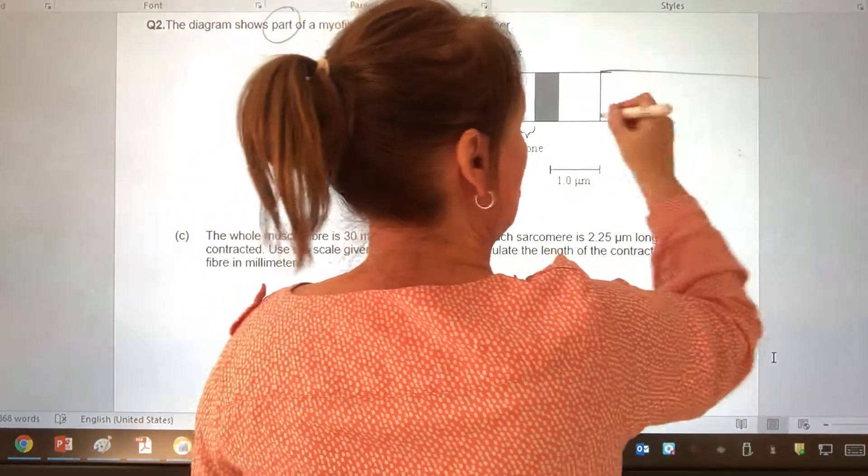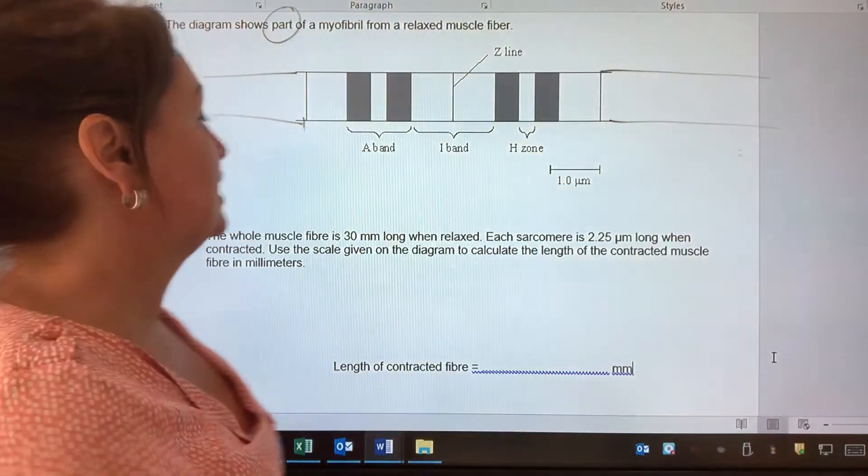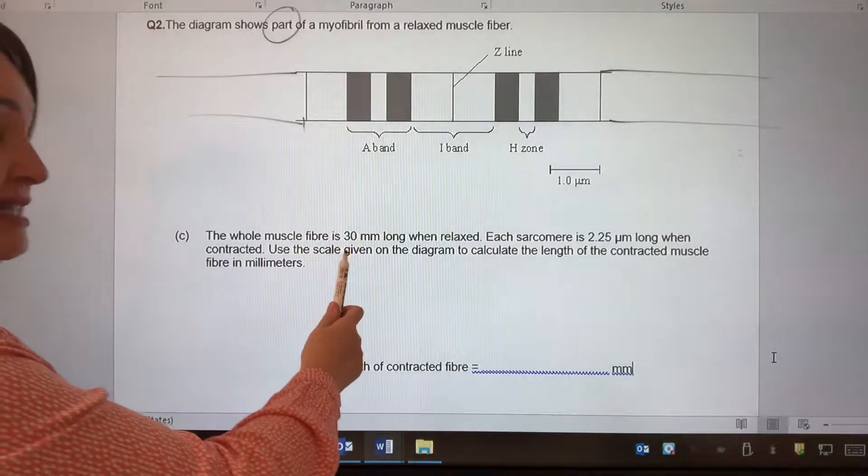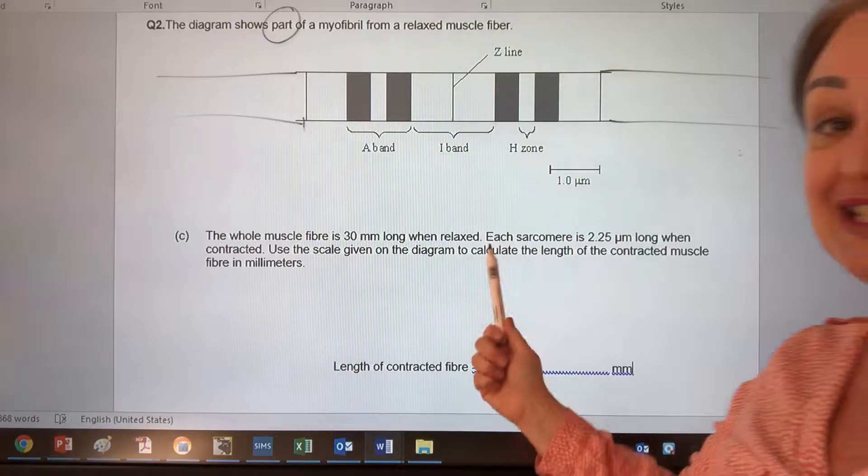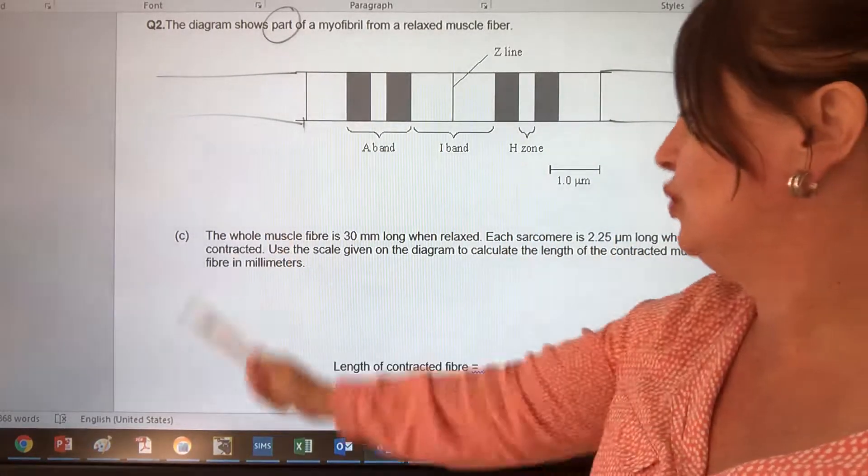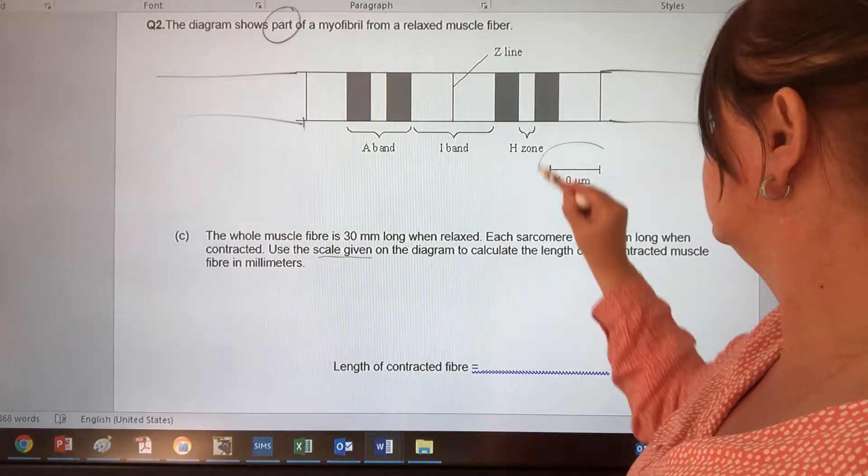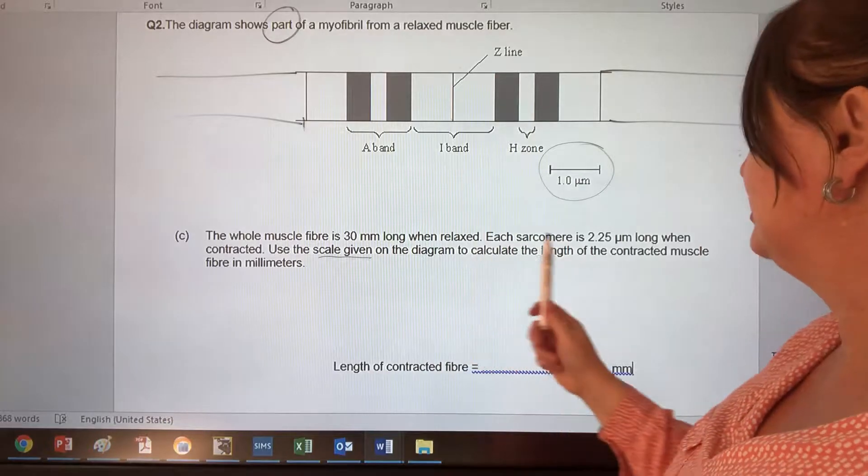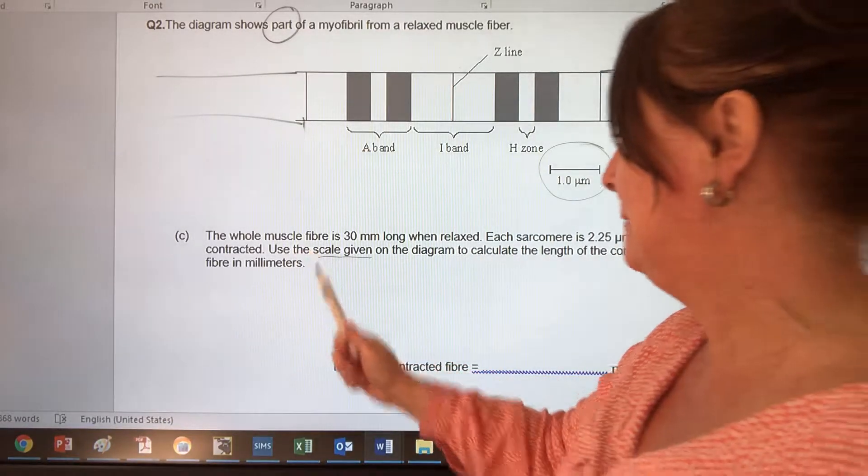So this would extend on and on, and that would extend on and on. It says the whole muscle fiber is 30 millimeters long when it's relaxed. Each sarcomere is 2.25 micrometers long when contracted. Use the scale given on the diagram to calculate the length of the contracted muscle fiber in millimeters.